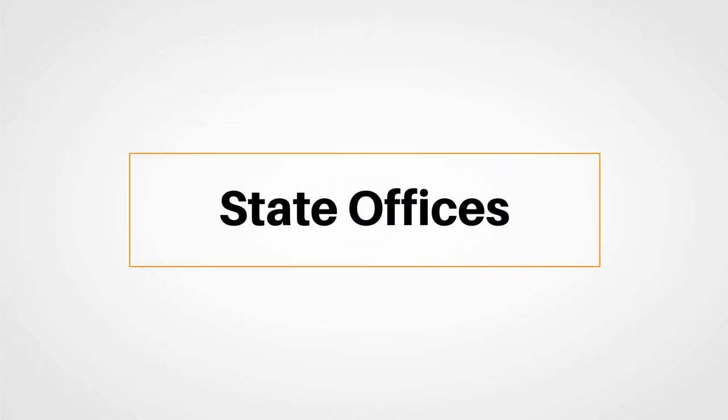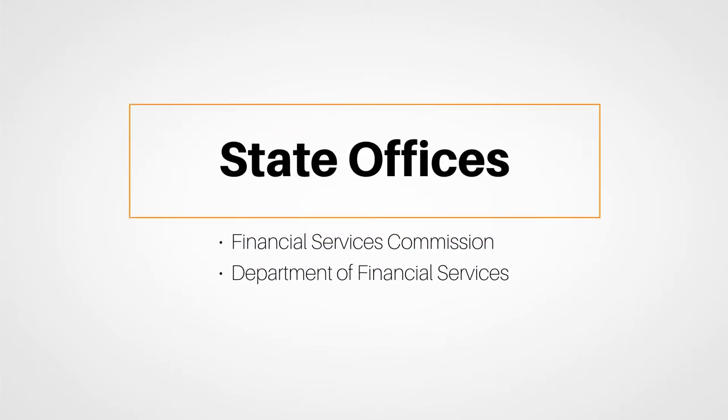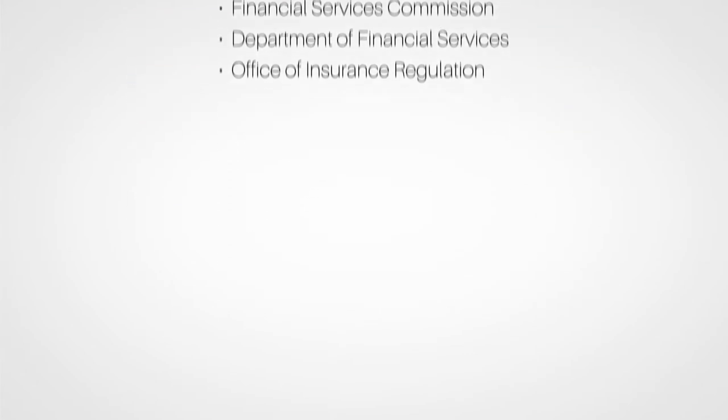We'll start with an overview of state offices specific to insurance, such as the Financial Services Commission, the Department of Financial Services, and the Office of Insurance Regulation. These are the regulatory authorities whose jurisdiction you'll be under once you're a licensed producer, so it's important to know their powers and responsibilities.